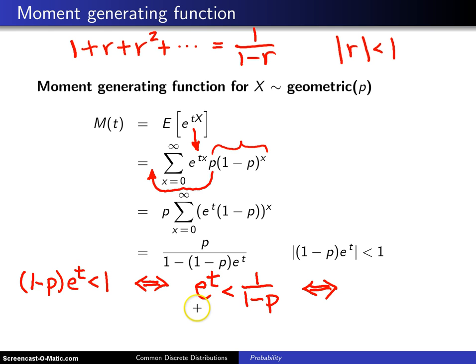And the last thing I want to do is take the natural log of both sides of that inequality, and we get t less than the natural log of 1 over 1 minus p.